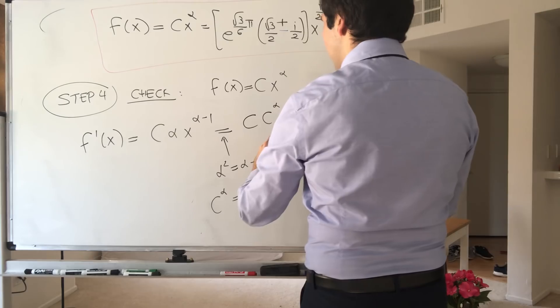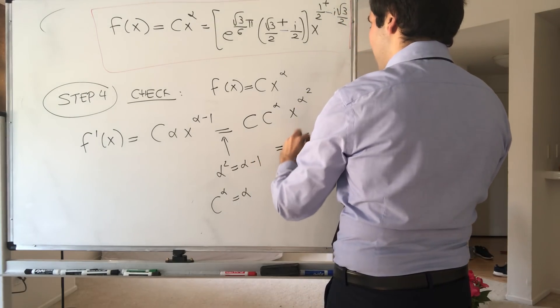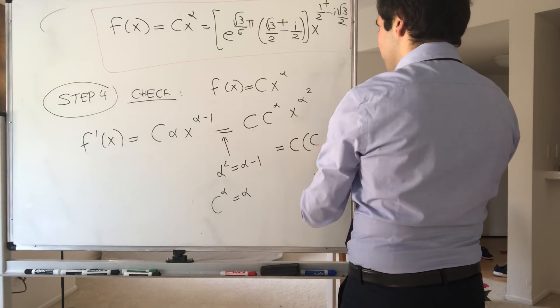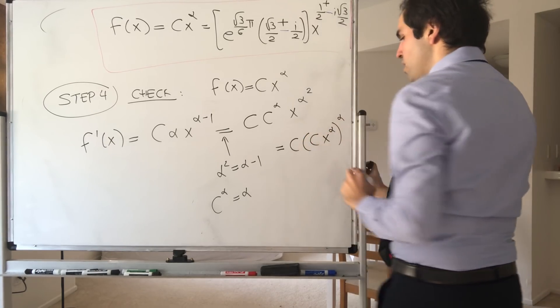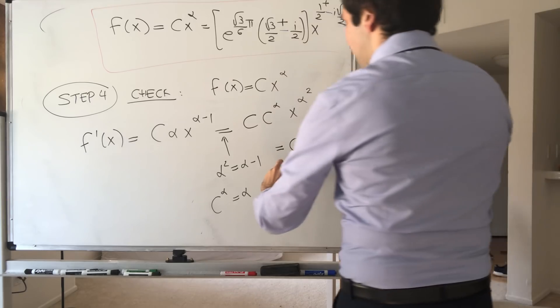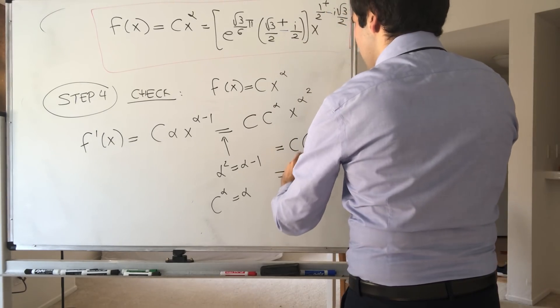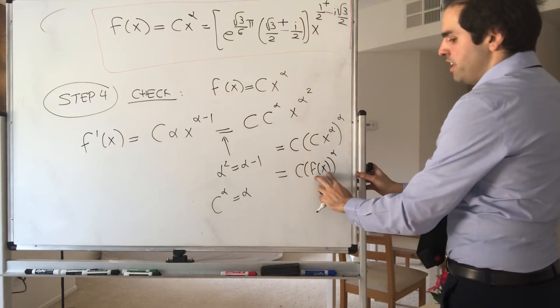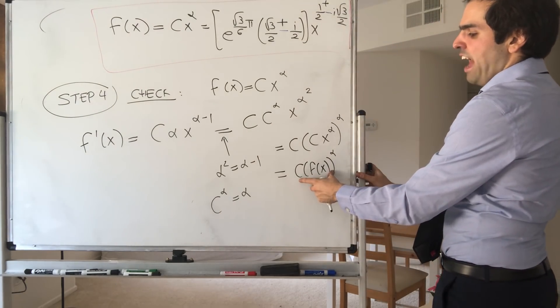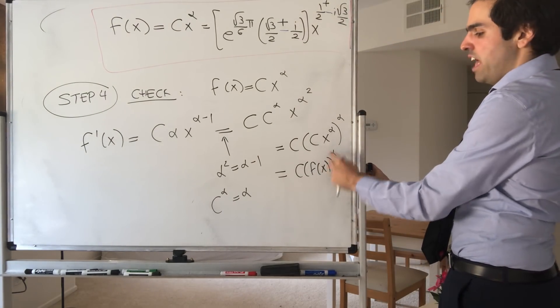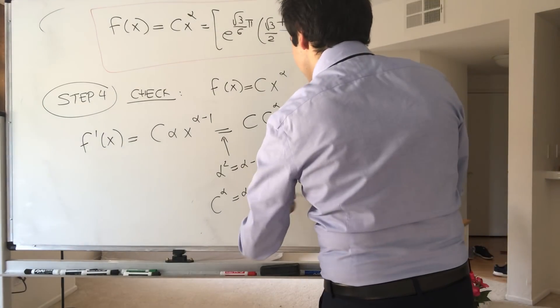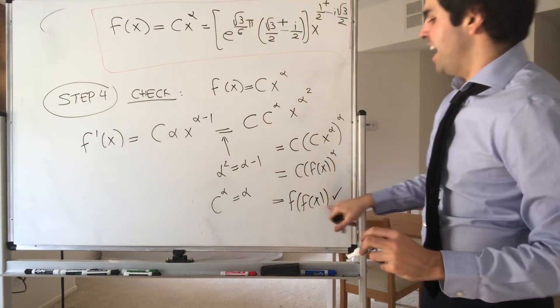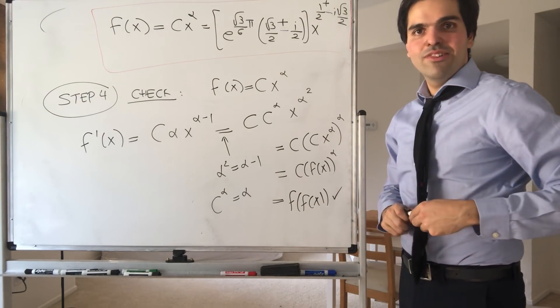So just by reverse engineering this, we get c times alpha, which is c to the alpha, and then x to the alpha squared. But the thing is, we can just factor out the exponent of alpha. So it's c times c to the alpha times x to the alpha, to the alpha power. But then that is just c of f of x to the alpha. But then now the input is f of x. The output is c times f of x to the alpha. So this is none other than f of f of x. And therefore, this is guaranteed to solve this equation.